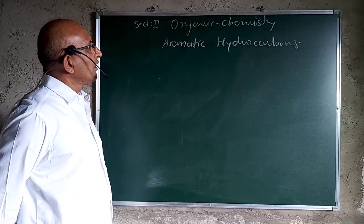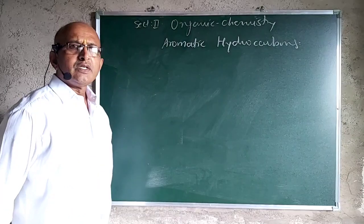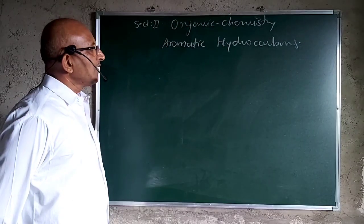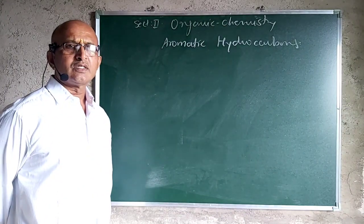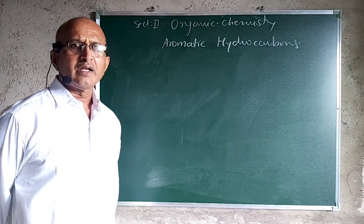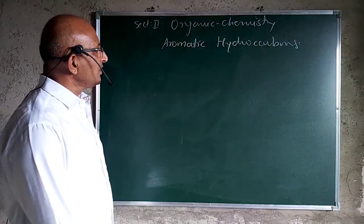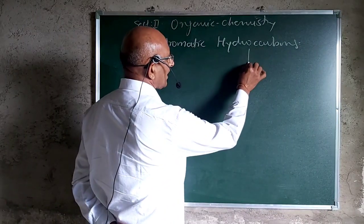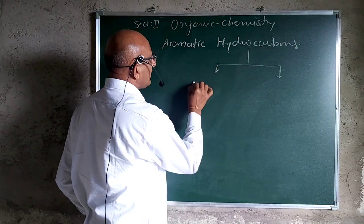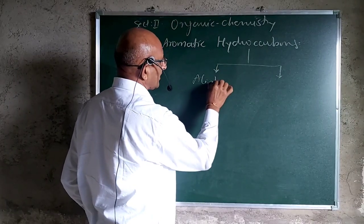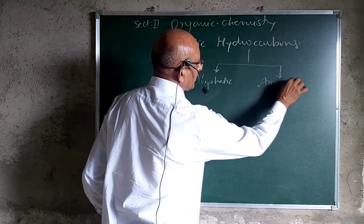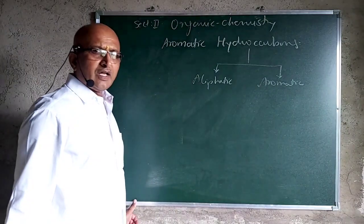As you have studied the chemistry of carbon compounds since we have started, the term hydrocarbon itself indicates that these are compounds formed by using carbon and hydrogen. In general, these hydrocarbons are classified into two types: aliphatic and aromatic.